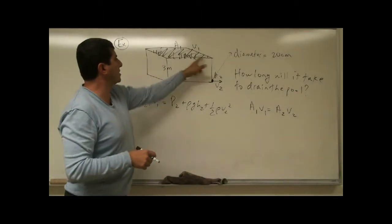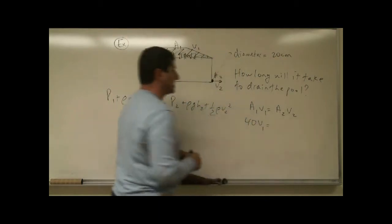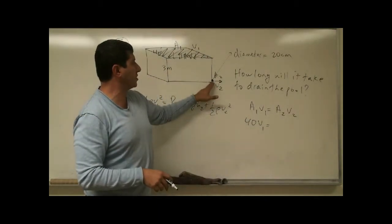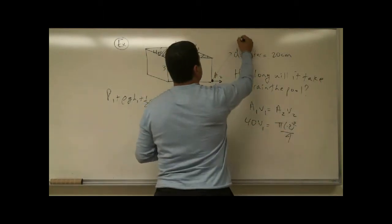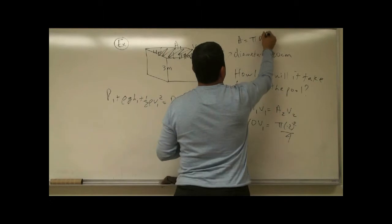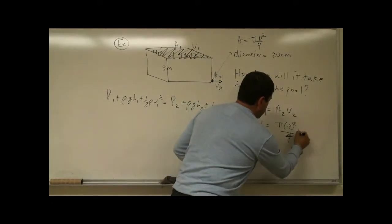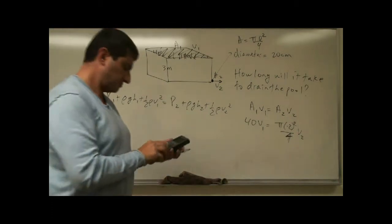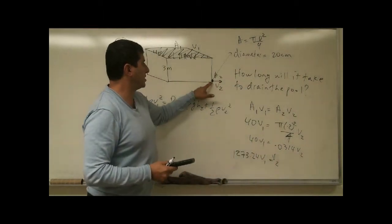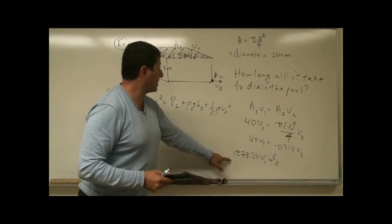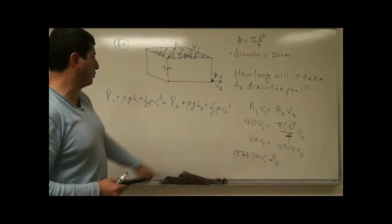Applying the continuity equation: a1·v1 = a2·v2. The surface area a1 is 10 × 4 = 40 m². For the pipe, if the diameter is 20 centimeters, the area is π × (0.2)² / 4. Using the area of a circle formula, π × diameter² / 4, we calculate and find that v2 = 1273.24·v1. So the velocity with which the water exits the pipe is much, much faster than the rate at which the water level drops.